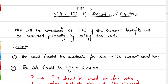It can be an individual asset or a group of assets. If it is a group of assets, it will be considered as a disposal group. If it is an individual asset, it will simply be considered as a non-current asset held for sale. However, simply wanting to sell an asset is not enough to classify it as a non-current asset held for sale.